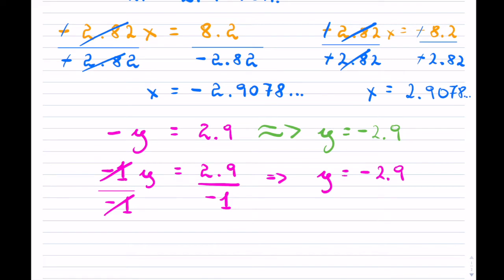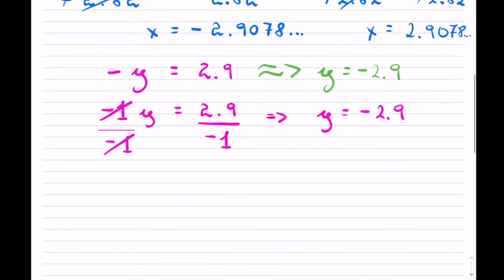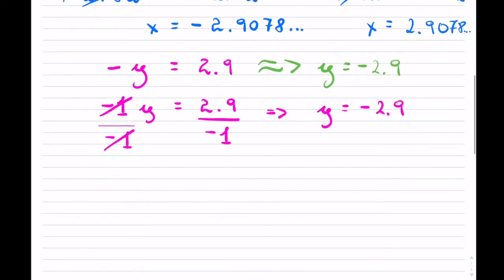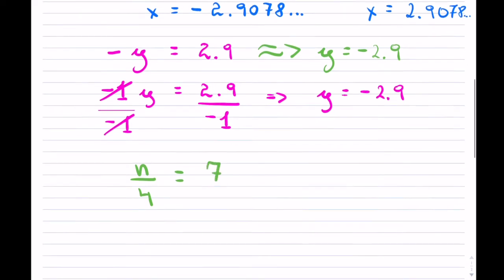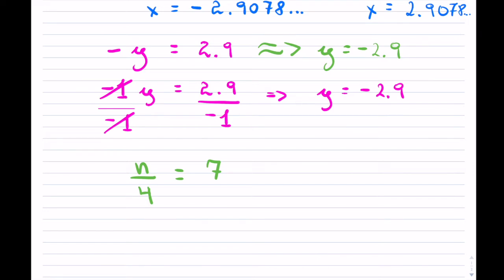What else can happen? You can have a number not multiplying the variable but actually dividing it. For instance, what if you had n over 4 equals 7? It's a slight little change, but people get thrown off. Because it's not 4 times n — now the 4 is in the denominator. Just as you wanted to get rid of a multiplied 4 by division, here you want to get rid of this 4 as well.